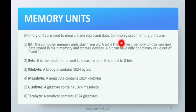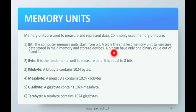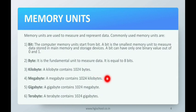Memory units are used to measure and represent data. The most commonly used units are: a bit — the smallest unit of computer memory, represented as 0 or 1. A byte is the fundamental unit to measure data and equals 8 bits. A kilobyte contains 1024 bytes, a megabyte contains 1024 kilobytes, a gigabyte contains 1024 megabytes, and a terabyte contains 1024 gigabytes.